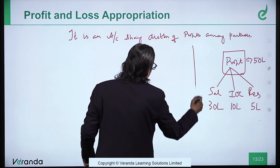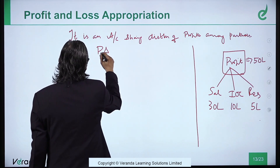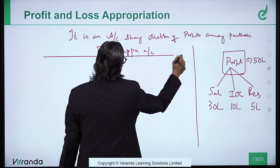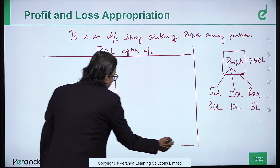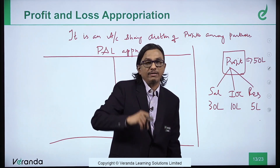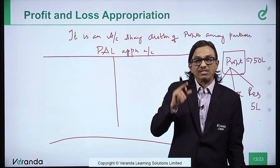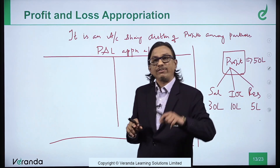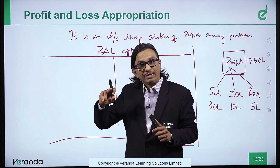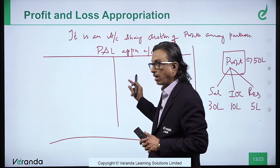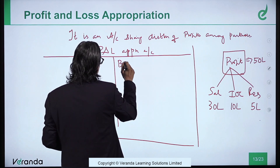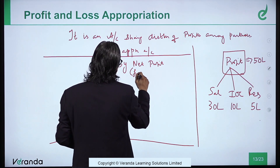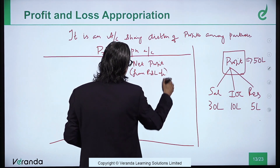How do you prepare that? Very simple. You write 'Profit and Loss Appropriation Account, for the year ended...' Suppose the agreement says you have to pay salary to a partner and interest on capital. First you have to see whether the firm has made a profit. So first prepare the trading account, gross profit transferred to P&L, net profit — do not transfer to capital, transfer to P&L appropriation account on the credit side. So, by net profit from the profit and loss account.